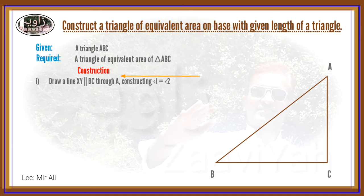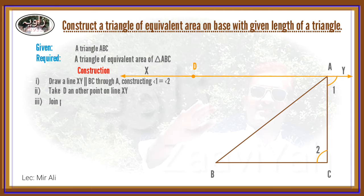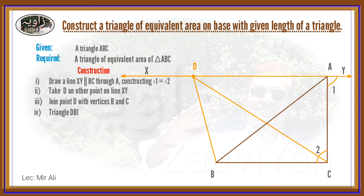The line xy and point D. Point D with B and C forms triangle DBC. The vertex is the same and this is the required triangle.